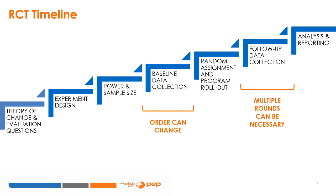It is important to note that timelines for experimental studies can vary considerably. In some studies, baseline data is available before the intervention is designed because data was collected for other purposes. In other cases, baseline data is not collected at all and all evidence is reported on the difference between treatment and control groups. Some interventions also require multiple rounds of follow-ups to test how the effect changes over time.